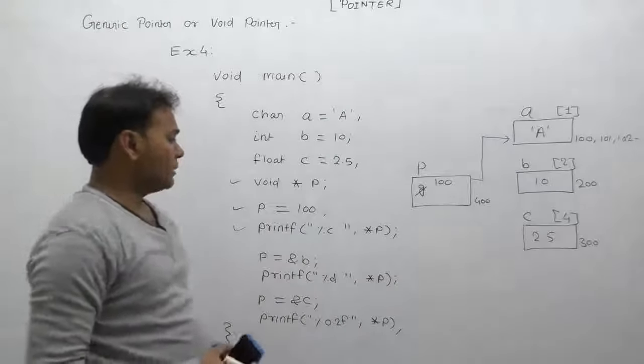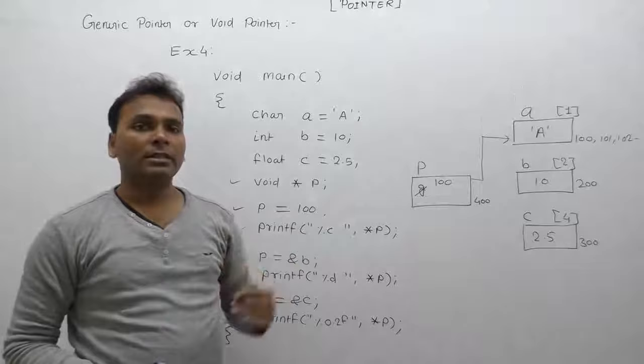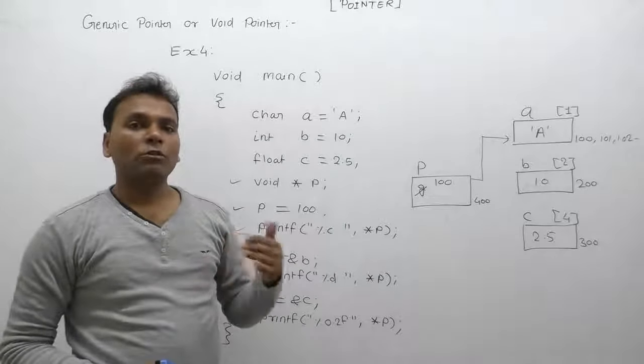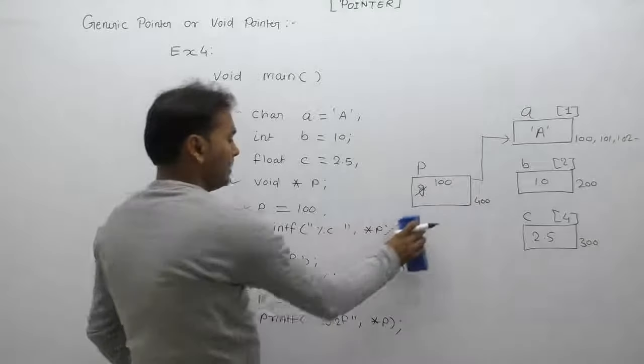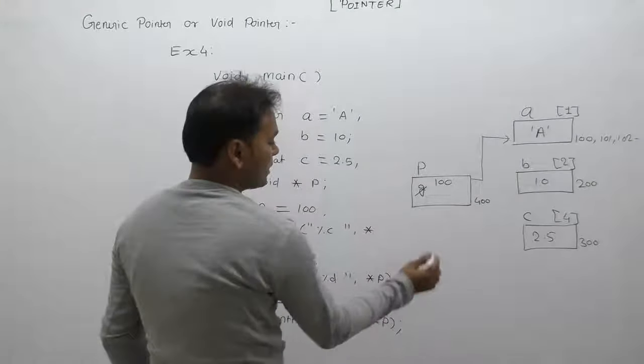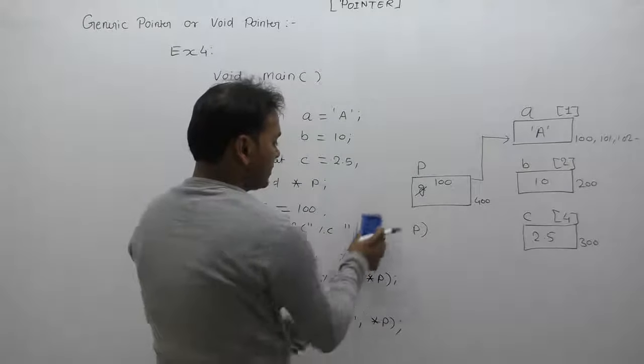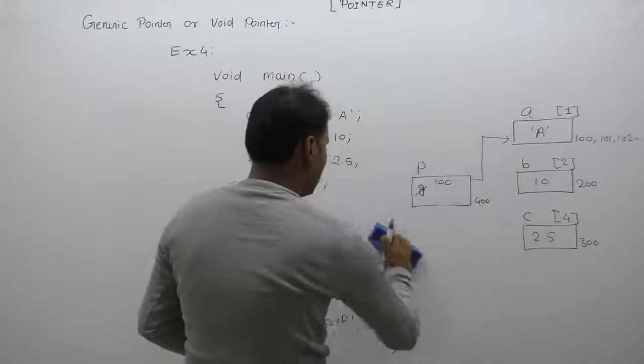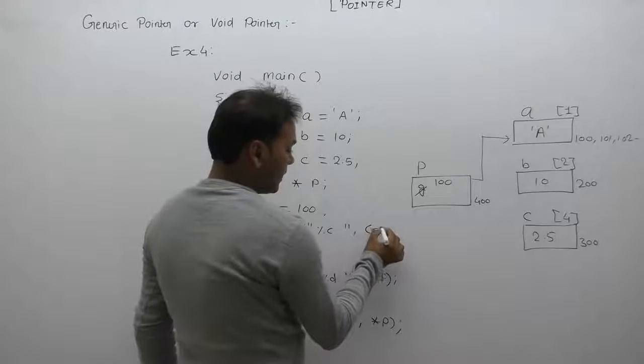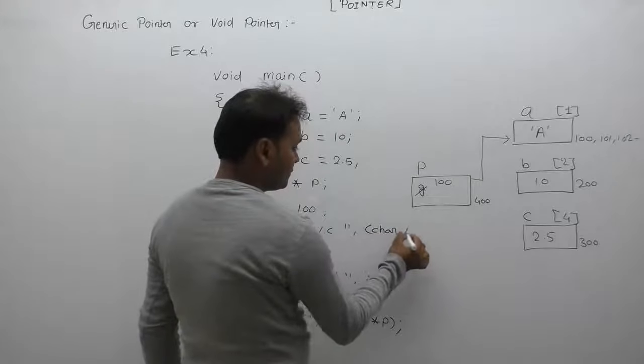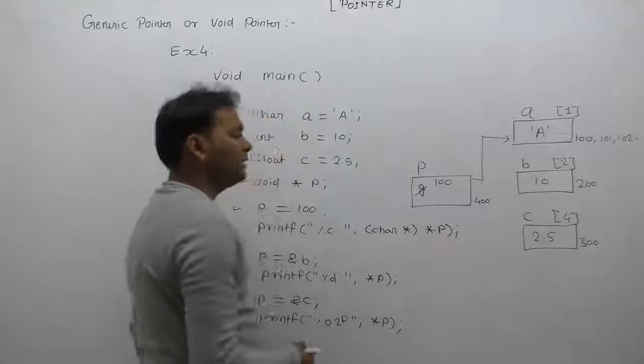Next, in this printf function, star p - if we apply star directly, we discussed that void pointer cannot be dereferenced directly. It requires type casting. That way we simply write type casting char star p. This is the syntax with type casting.